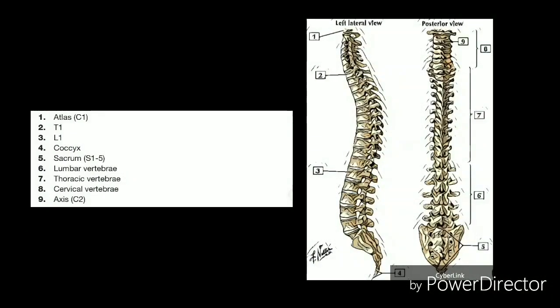The spine is made of 33 individual bones stacked one on top of the other. This spinal column provides the main support for your body, allowing you to stand upright, bend, and twist, while protecting the spinal cord from injury. Strong muscles and bones, flexible tendons and ligaments, and sensitive nerves contribute to a healthy spine. Yet any of these structures affected by strain, injury, or disease can cause pain.